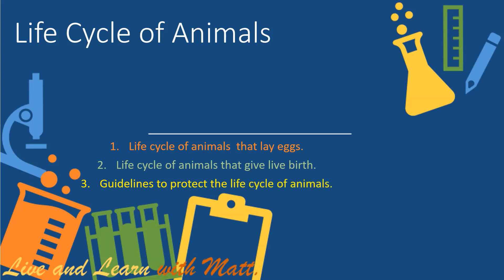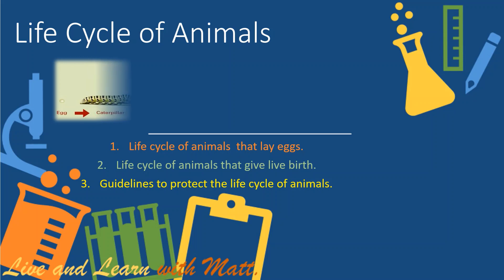Now let's take a look at the life circle of animals. Animals are living things — they grow and make their young to continue their species. How animals change as they grow: some change by a lot and some change by only a little. These changes are called a life circle.